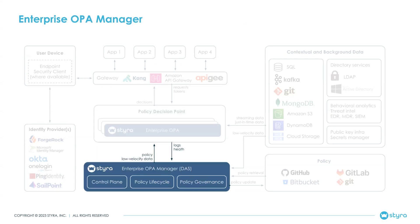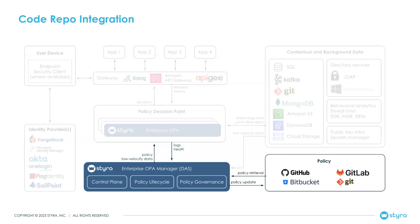These policy engines are managed by a central manager called the Enterprise OPAP manager. The manager provides the control plane, policy lifecycle, and policy governance functions. For example, it distributes the right policy data and configurations to all the policy engines. It also integrates with your existing Git infrastructure, which allows your existing Git workflows for application code to carry over for managing your authorization policy.